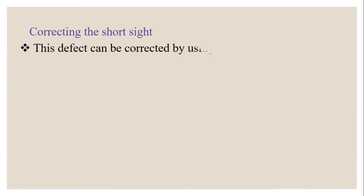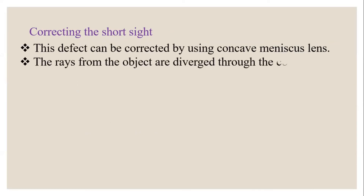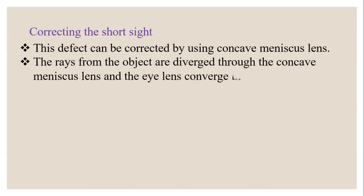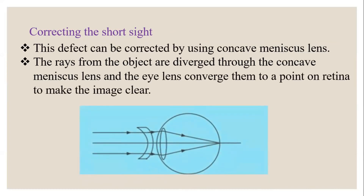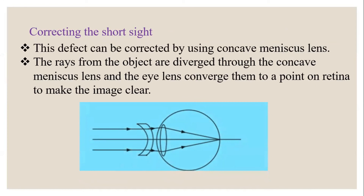To correct short sight, a concave meniscus lens is used. The rays from objects are diverged through the concave meniscus lens, and then the eye lens converges them to a point on the retina to make a clear image. The light rays from far away objects are spread by the concave meniscus lens and then collected or converged onto the retina by the eye lens.